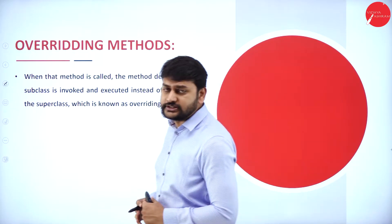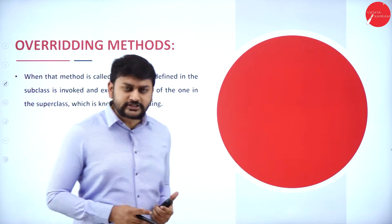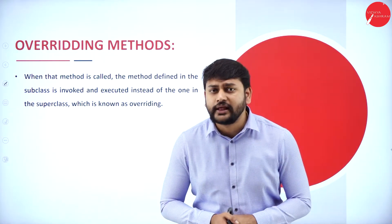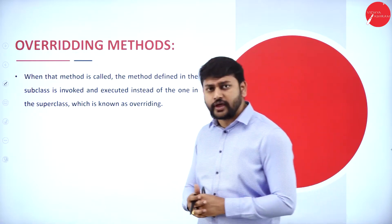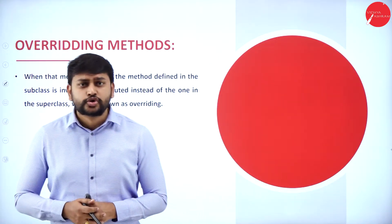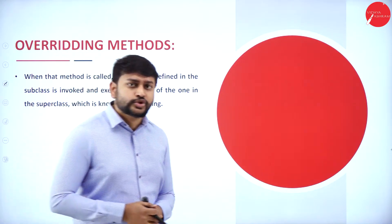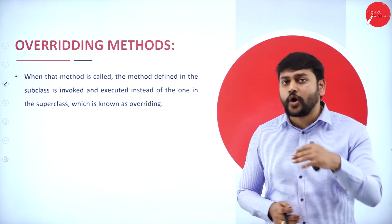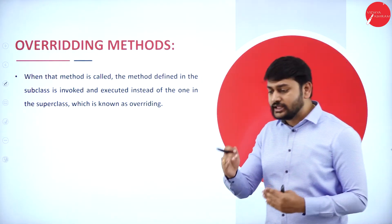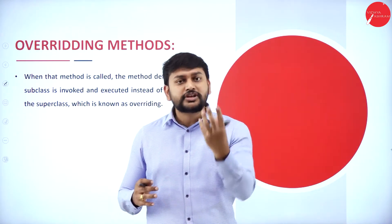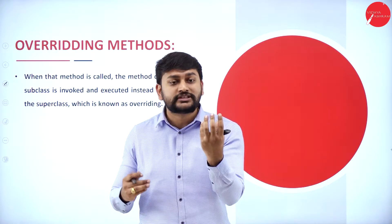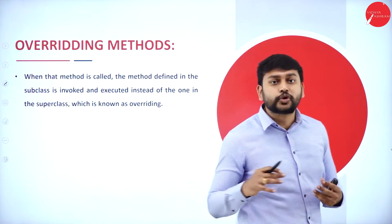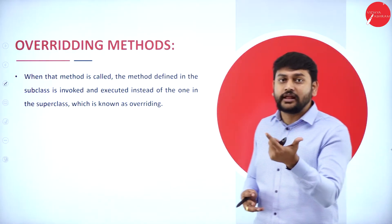The first topic is overriding methods. Let me give you a simple example to explain this concept. I have a method, and what I can do with that method is change its meaning or functionality. That is what I will call overriding. Say for example I have a method performing some function, but what I will do is change the functionality of that particular method — that process is overriding.